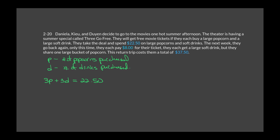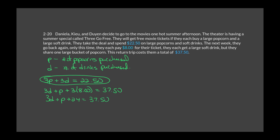The second week: 3D plus P plus three theater tickets equals $37.50. The three tickets cost $24 total (3 times $8), so subtract $24 from $37.50 to get the second equation: P plus 3D equals $13.50.